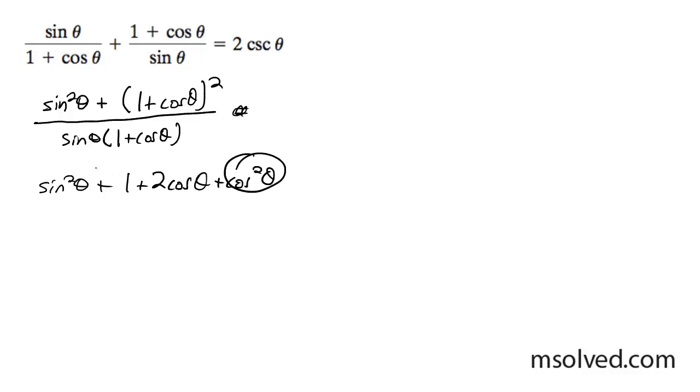So these two terms here equal up to one. I'll just write sinθ(1+cosθ). So that turns to one, and I add that to the one that's already there.